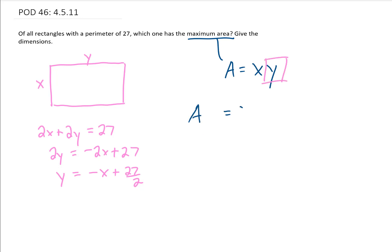That is going to give me A equals x times negative x plus 27 halves. Now notice that this equation for area is a function of just one variable, x. So we could call this A of x.